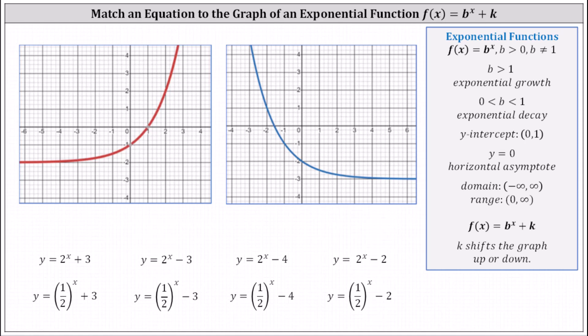Notice in the first row, all the equations represent exponential growth, and if b is between zero and one, we have exponential decay. Notice the second row all represent exponential decay.